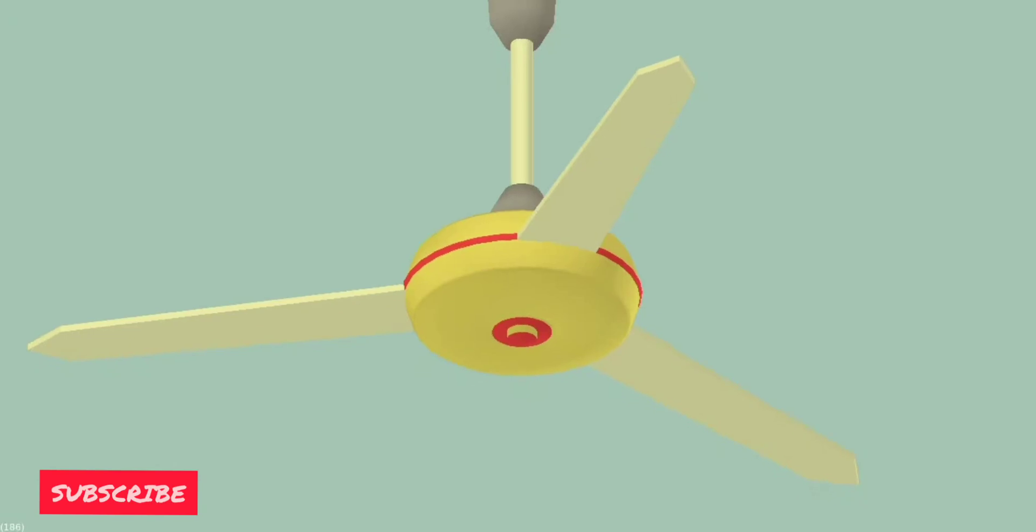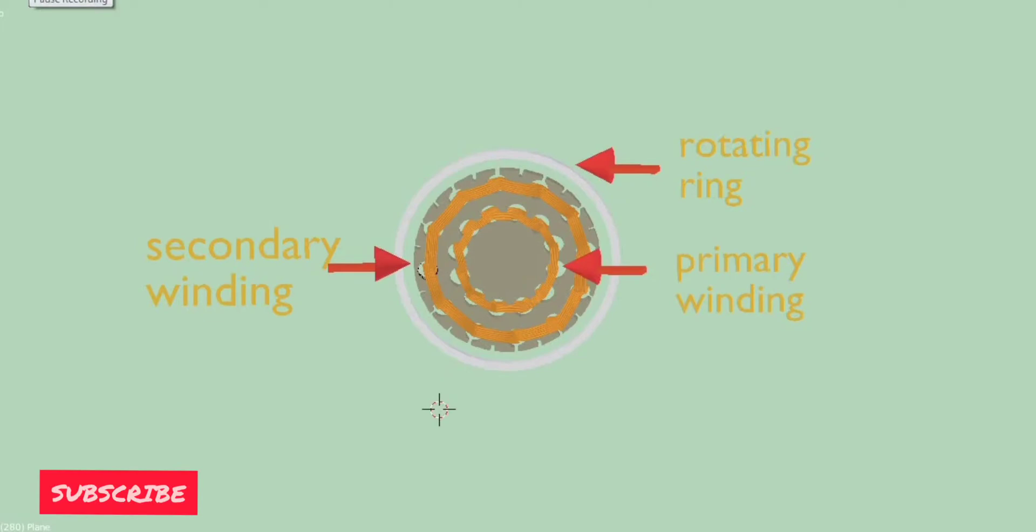If we open the fan, we will see primary winding, secondary winding, and circular disc. The supply is given to both the coils. The magnetic flux will generate near the windings. As the circular ring is in the changing magnetic flux, the voltage will induce inside the ring also, and hence the magnetic flux is induced near the circular ring. Because of attraction and repulsion between them, the torque is generated in the circular ring and it starts rotating. The circular ring is connected to the fan and blades so that they also rotate with it.